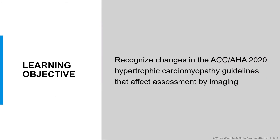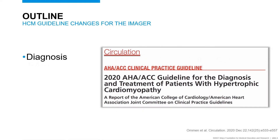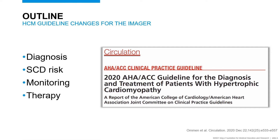Our learning objective for this talk is to recognize changes in the ACC/AHA 2020 hypertrophic cardiomyopathy guidelines that affect assessment by imaging. We're going to look at four aspects of HCM care that have changed with regards to imaging: diagnosis of HCM, sudden cardiac death risk stratification, monitoring of patients with known HCM, and a therapy change for patients with hypertrophic cardiomyopathy.